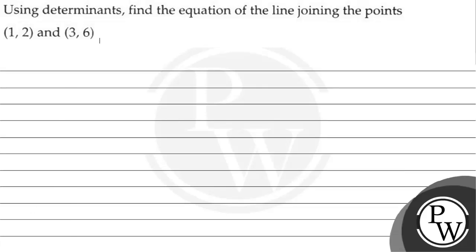Hello, let us read the question. The question says, using determinants, find the equation of the line joining the points (1, 2) and (3, 6).